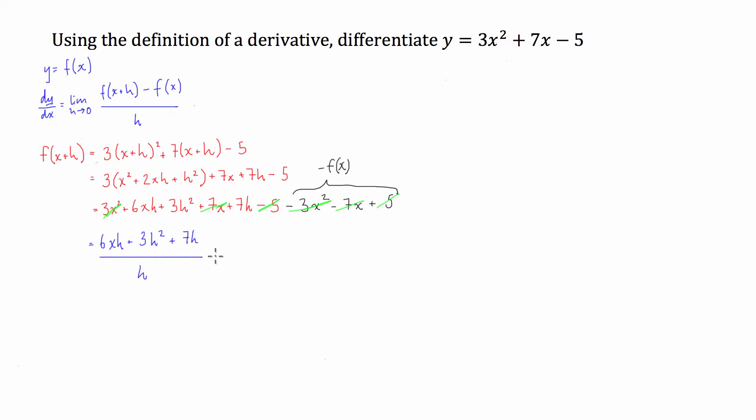Cool. So what we want to do is to simplify this, we're going to factorise the numerator by h. So we're going to have h outside of 6x plus 3h plus 7, and that's all over h. Now it should be fairly obvious that we can cancel out these two h's.